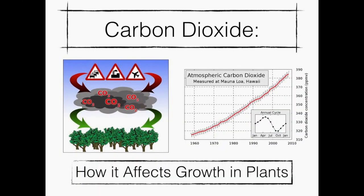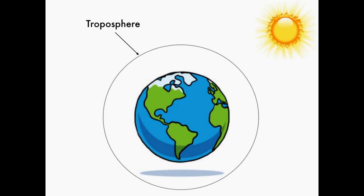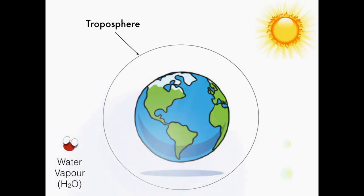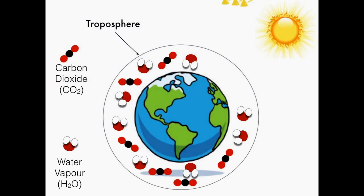Carbon dioxide is a necessary and valuable component that plays an important role in an exponential list of systems. One of these systems involves the exploitation of carbon dioxide by plants, in particular C3 and C4 plants, which we will discuss in this video.